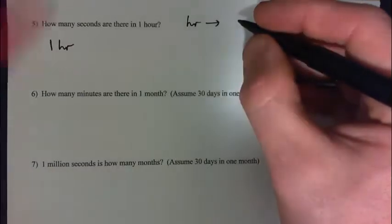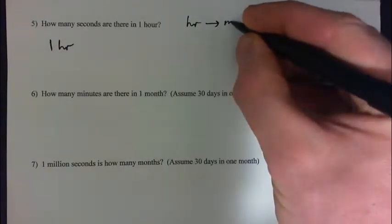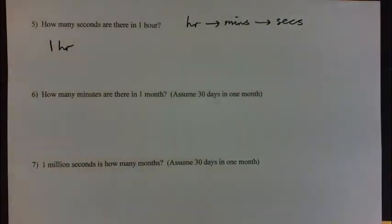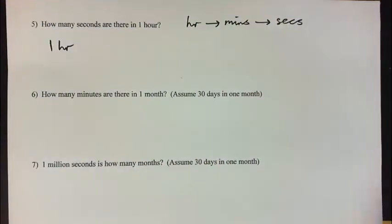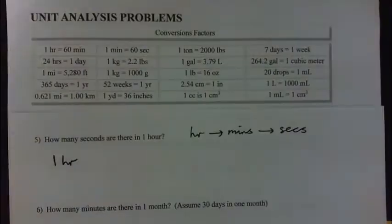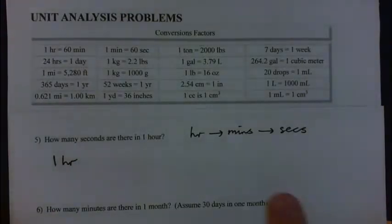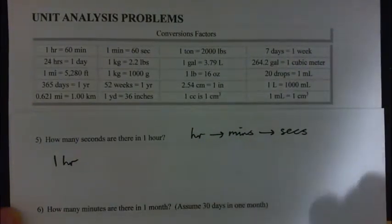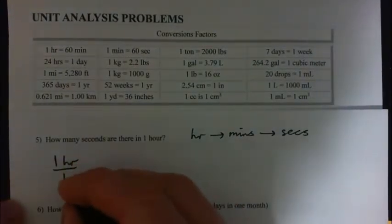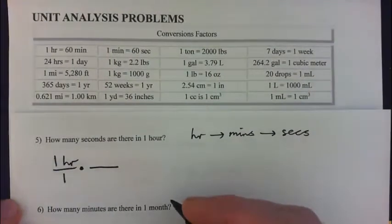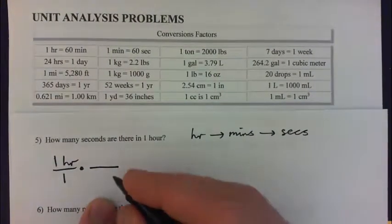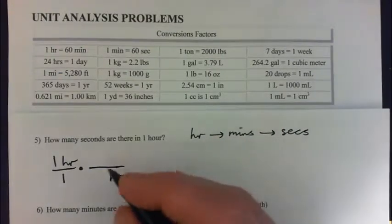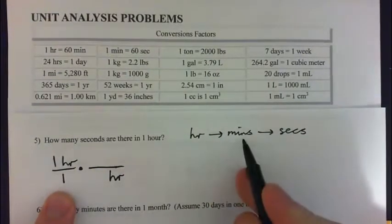We've got to go from hours to seconds. It's probably best to go first from hours to minutes, and then go from minutes to seconds. We're going to take it step by step — minutes first and then get to seconds. We can use the chart here to find the facts we need, but you might already know there are 60 minutes in an hour and 60 seconds in a minute.